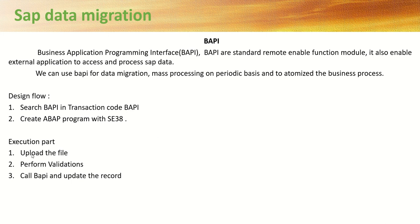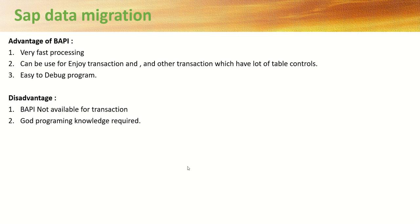The execution part is as follows: upload the file, perform all the validations, call the BAPI, and update the record. The advantages of BAPI: BAPIs are very fast in processing. They can be used for enjoy transactions and other transactions which have a lot of table controls. BAPIs are like a function module which is easy to debug. Disadvantage: BAPIs are not available for all transaction codes, and for BAPI we require some good programming knowledge.